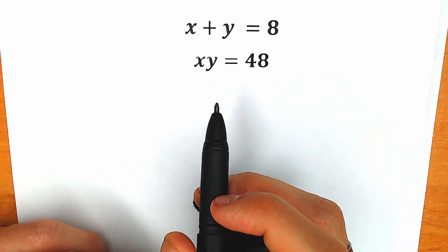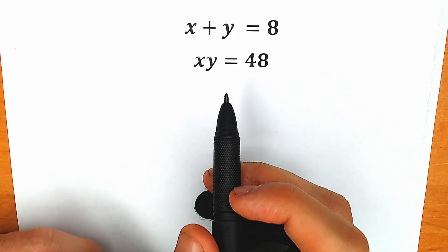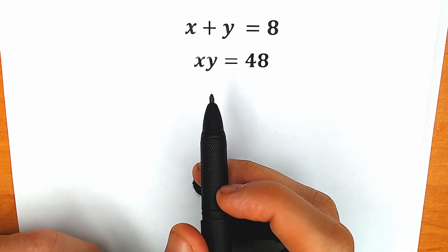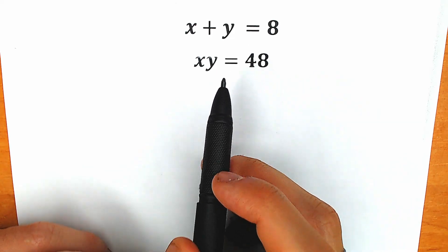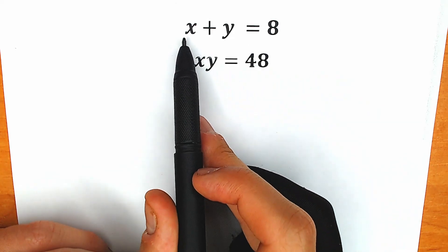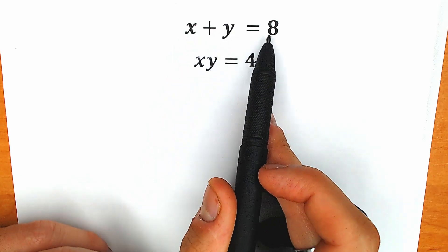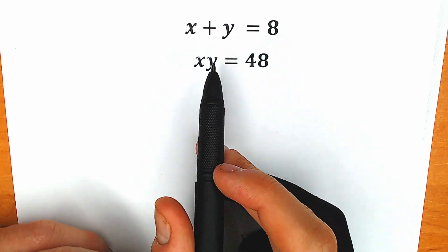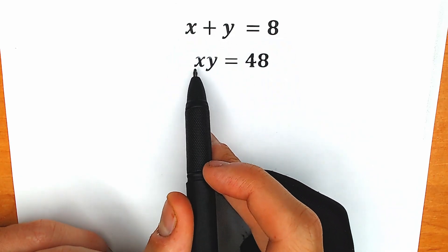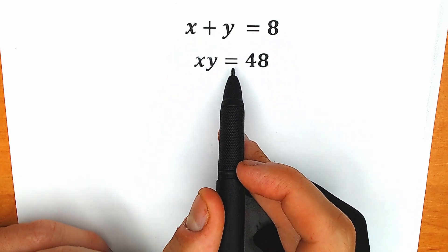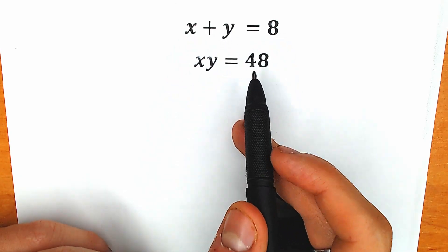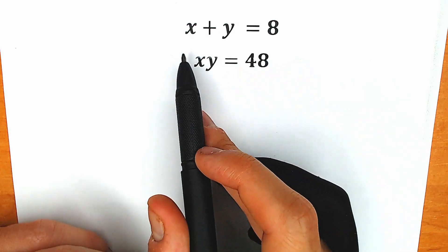Hello everyone! Happy to see you here! Welcome back to my channel Hiya Mathematics! Today we have a very interesting question. We know that the sum x plus y equals 8, and we know the product x times y equals 48. And we need to find x and y.